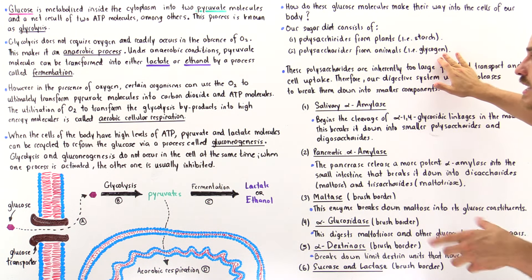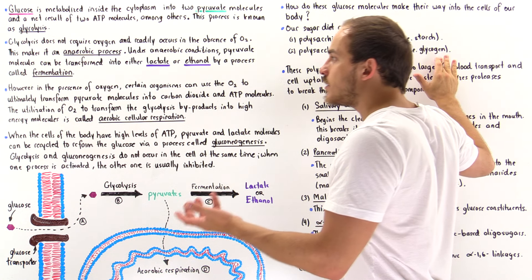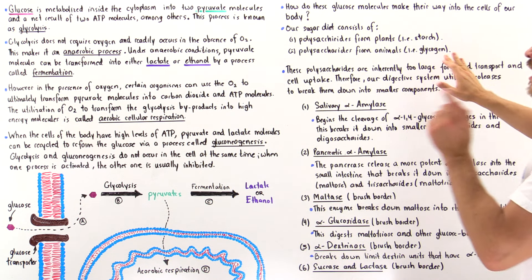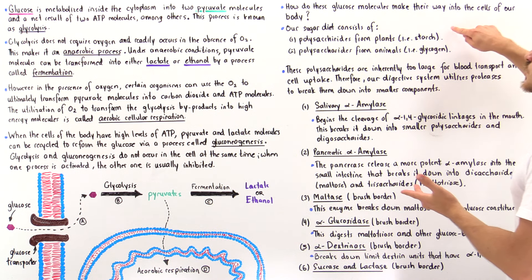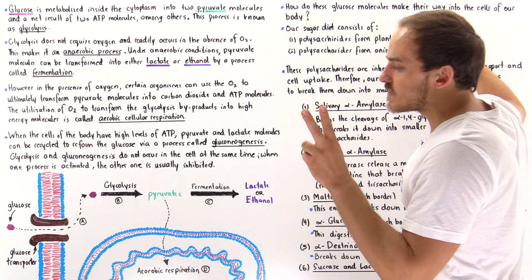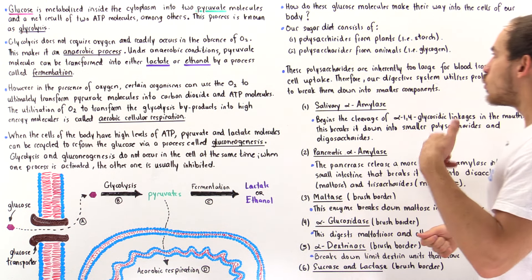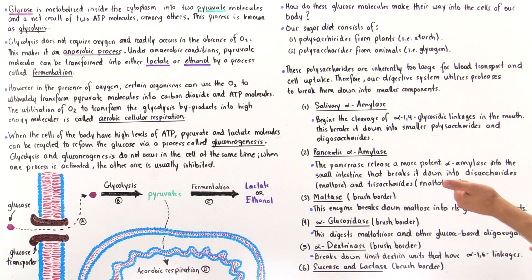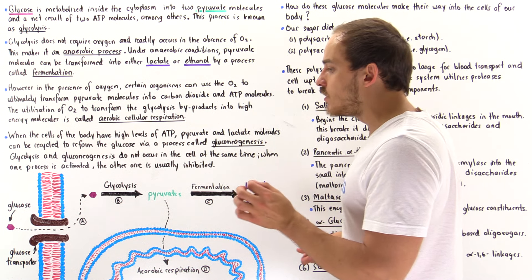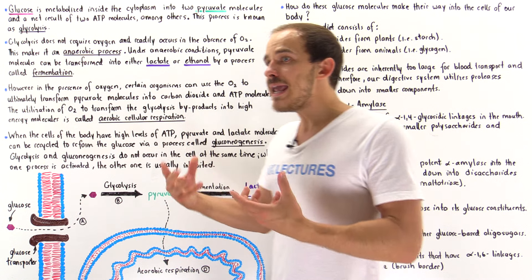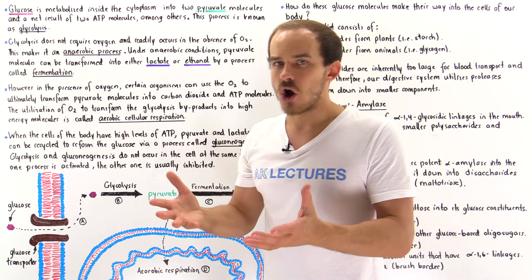If we ingest things like pasta, bread, or cereal, these are actually polysaccharides that come from plants — what we're ingesting is starch. There are two types of starch: amylose and amylopectin. Amylose is basically a linear helical structure, while amylopectin, like glycogen, is actually a branched form of starch.